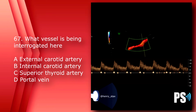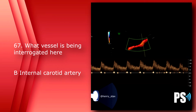Number 67: What vessel is being interrogated here? A) external carotid artery, B) internal carotid artery, C) superior thyroid artery, or D) portal vein. The answer is B, internal carotid artery — you have a nice low-resistance waveform. The portal vein is usually a monophasic or slightly phasic venous waveform, and the external carotid artery is higher resistance, as is the superior thyroid artery.